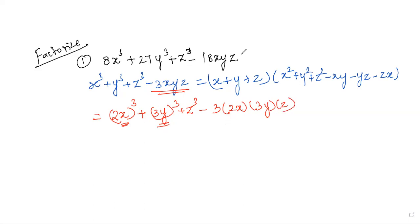So this is in the form. Now we'll write the factors using the formula. Our x is 2x, y is 3y, z is z. Substitute into the formula: 2x plus 3y plus z.